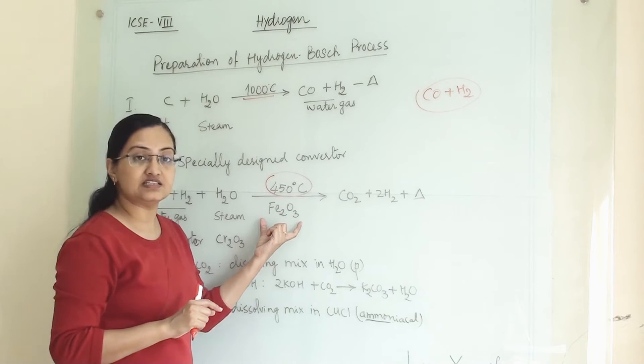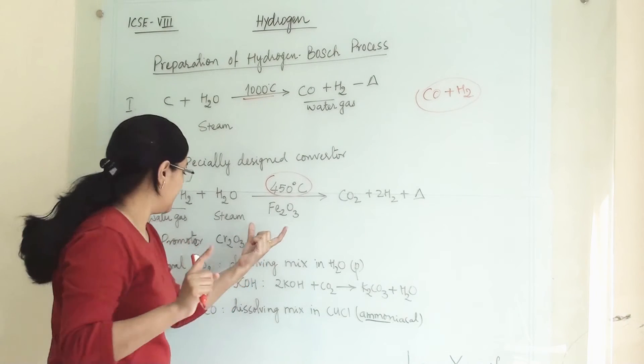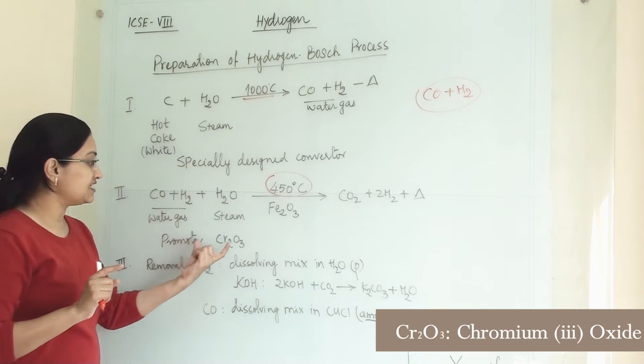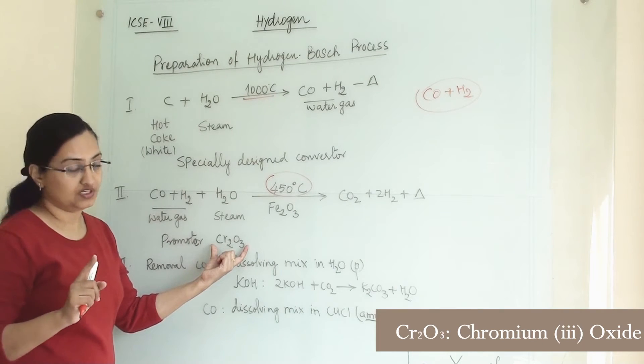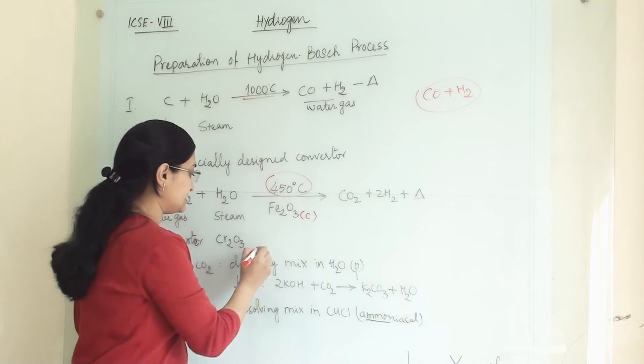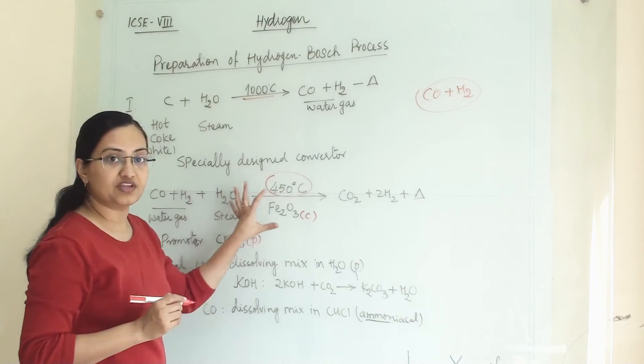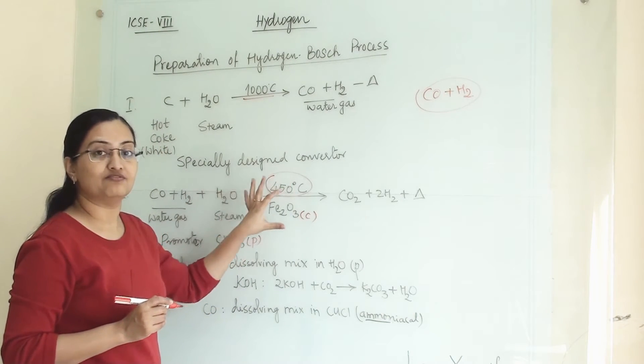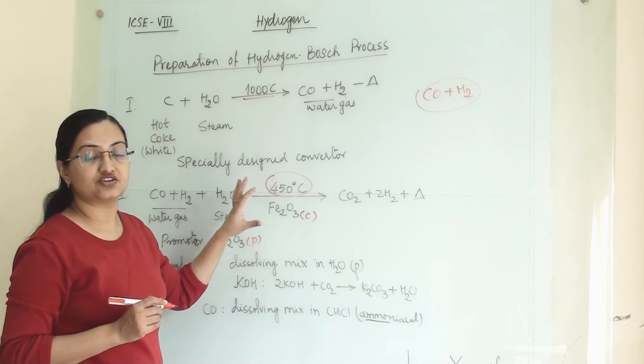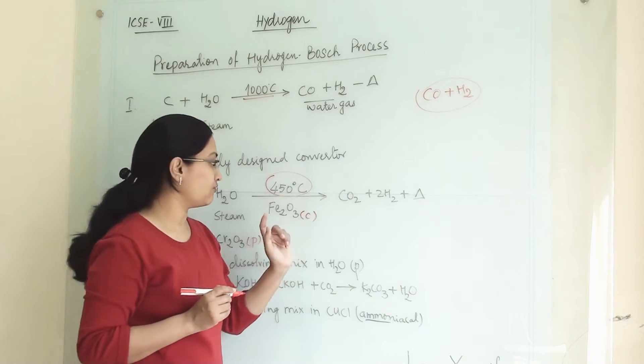Our catalyst is Fe2O3 and our promoter is Cr2O3. One is catalyst, and this is promoter. With the help of these two, our reaction rate will become faster and this reaction will move towards the forward direction.